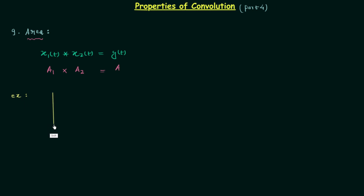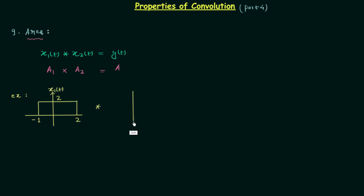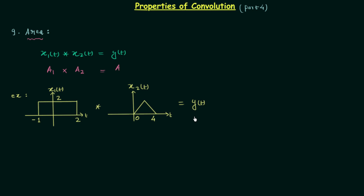In this example, the waveform of the first signal x1(t) spans from -1 to 2, with a height of 2. This signal is convoluted with another signal x2(t) having a triangular waveform, spanning from 0 to 4. After convoluting x1(t) and x2(t), we have the resultant signal y(t), and we are required to calculate the area of the resultant signal y(t).